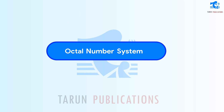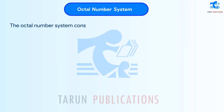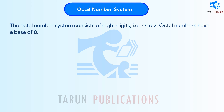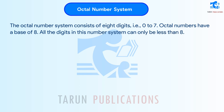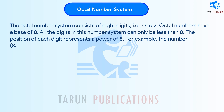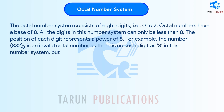Octal number system. The octal number system consists of eight digits, i.e., 0 to 7. Octal numbers have a base of 8. All the digits in this number system can only be less than 8. The position of each digit represents a power of 8. For example, the number 832 base 8 is an invalid octal number as there is no such digit as 8 in this number system, but the number 732 base 8 is a valid octal number.